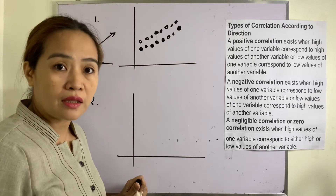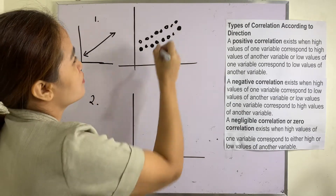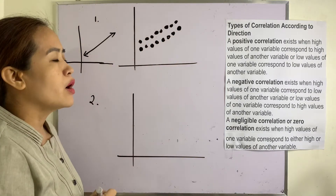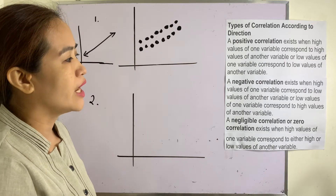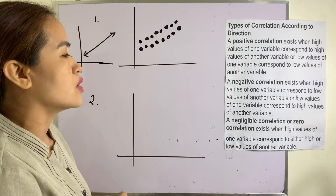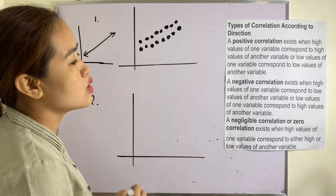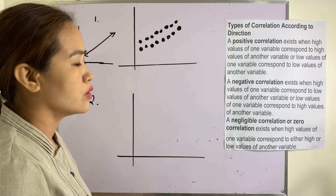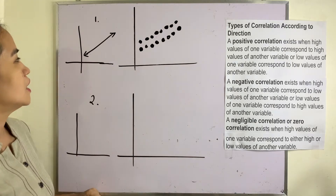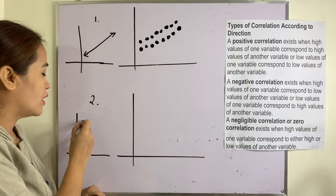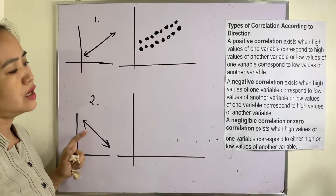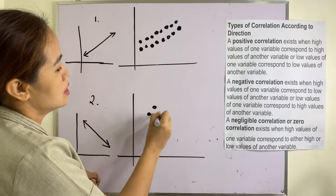So positive correlation looks like this — points rising from left to right. A negative correlation exists when high values of one variable correspond to low values of another variable, or low values of one variable correspond to high values of the other variable — the same as the graph of a linear equation whose slope is negative, so the points go this way.